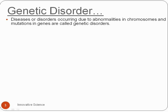There are two possibilities for genetic disorders. One possibility is abnormalities in chromosomes, and the other is mutations in genes. The diseases and disorders can arise due to abnormalities in chromosomes.